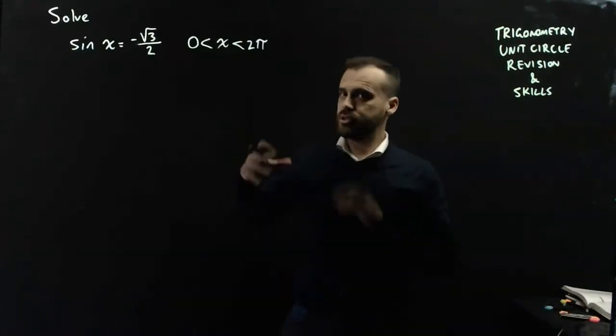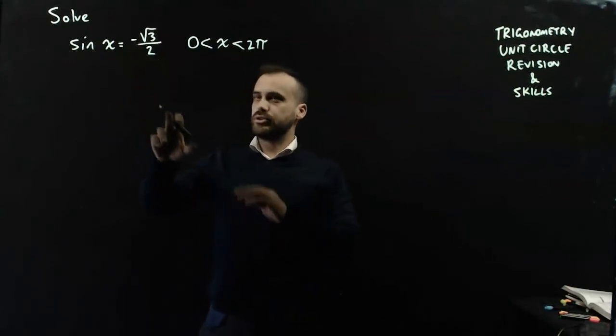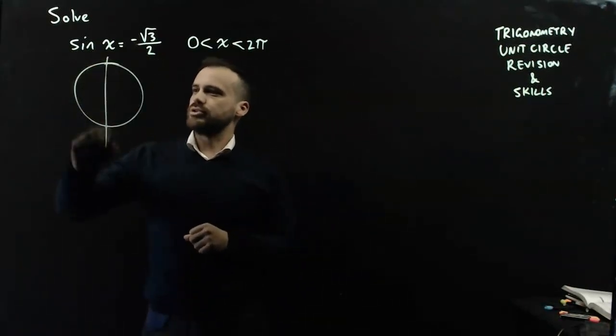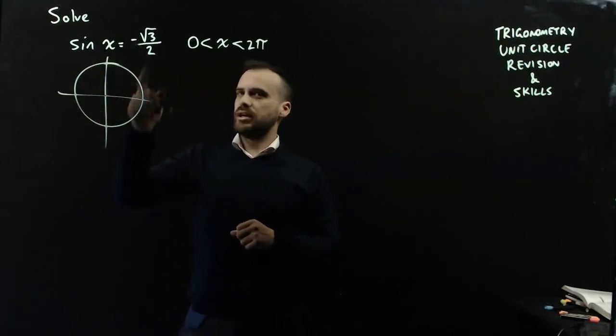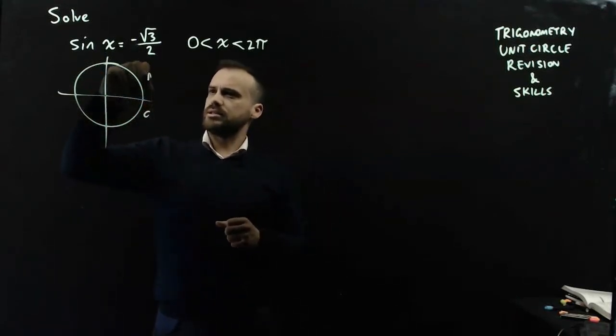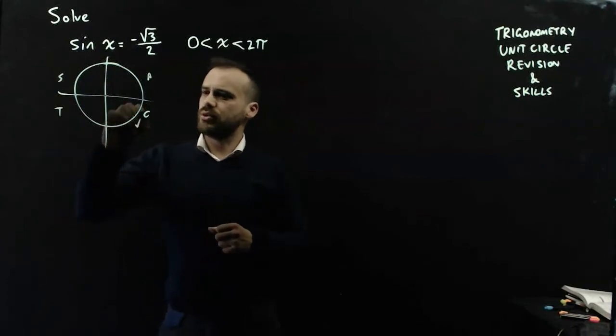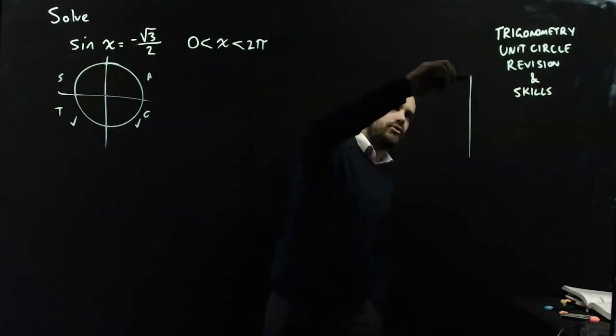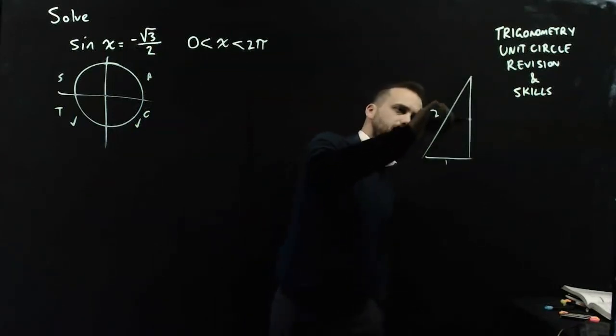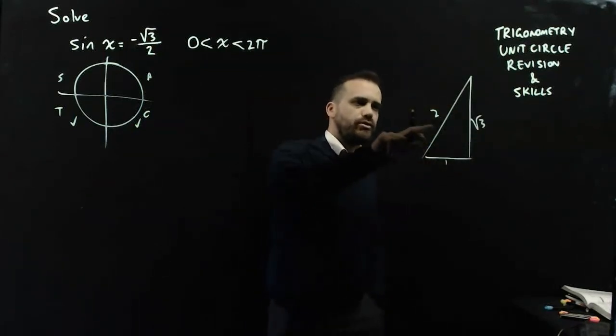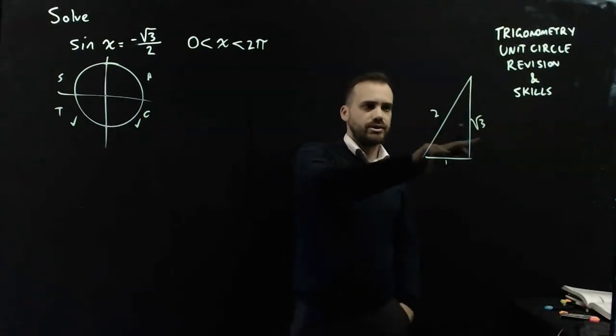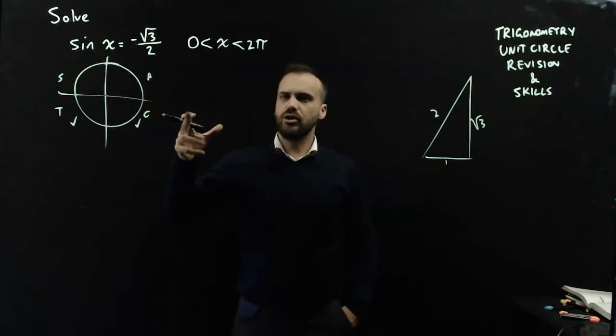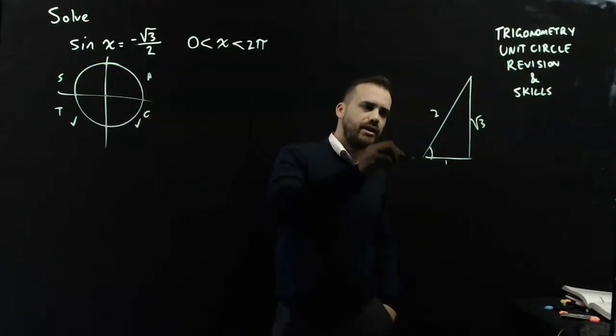We come to solving them. These are a little tougher. Sin x equals negative root 3 on 2 in the domain 0 to 2π. So, I'll draw a little unit circle here. It's a negative answer, so it's going to exist in this quadrant or this quadrant. Now, root 3 on 2, where have I seen that before? Well, I've got a unit circle here, 2, 1, root 3, root 3 on 2. So, it's going to be this thing here.